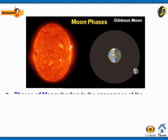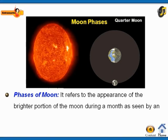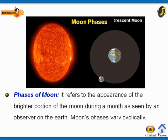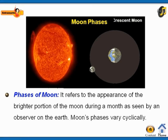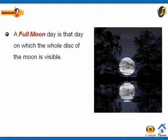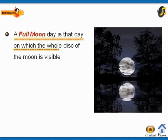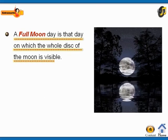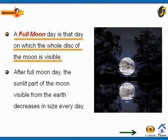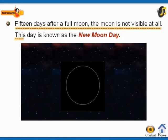The phases of the moon refer to the appearance of the brighter portion of the moon during a month, as seen by an observer on the earth. The moon's phases vary cyclically. A full moon day is that day on which the whole disk of the moon is visible. Fifteen days after a full moon, the moon is not visible at all — this day is known as the new moon day.